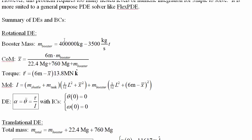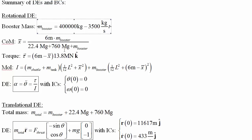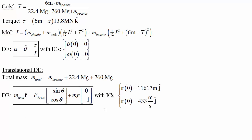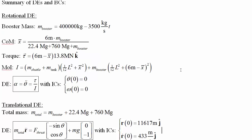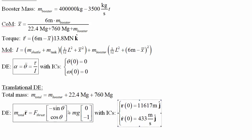Before moving to FlexPDE, we summarize the differential equations and boundary conditions. The rotational problem involves: booster mass, center of mass calculation, torque, moment of inertia — yielding the rotational DE with initial conditions. The translational part includes: total mass, the vector differential equation, and corresponding initial conditions. These represent the type of problems you'll encounter on the test — deriving the DEs and initial conditions, then solving them using Maple or FlexPDE.